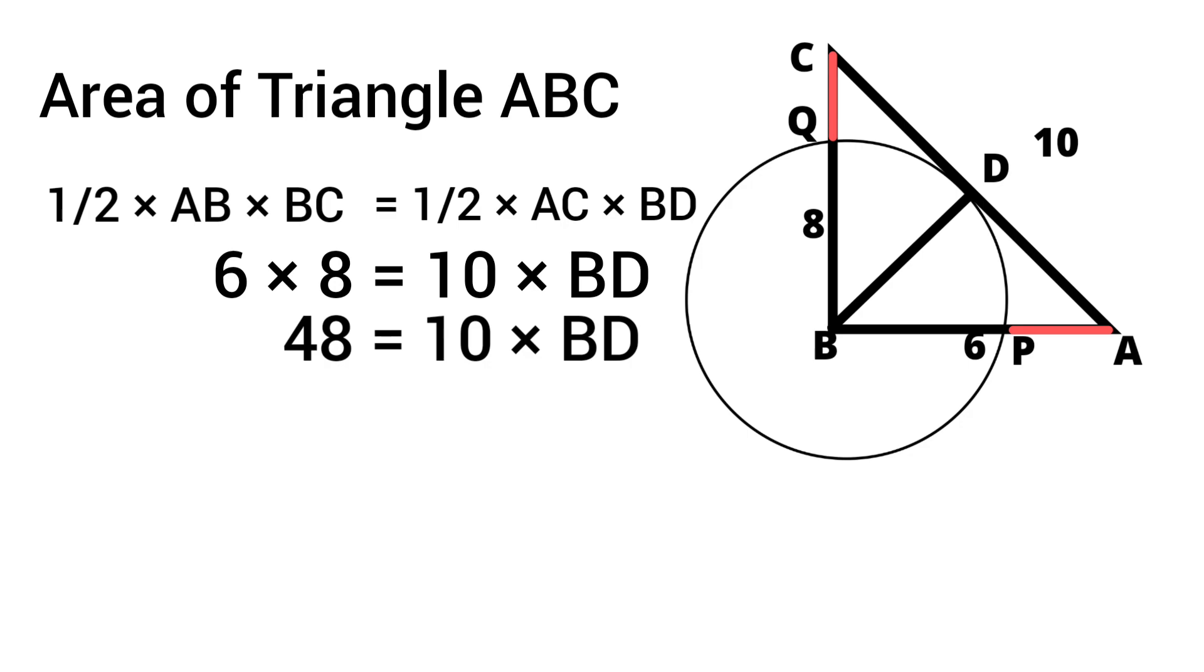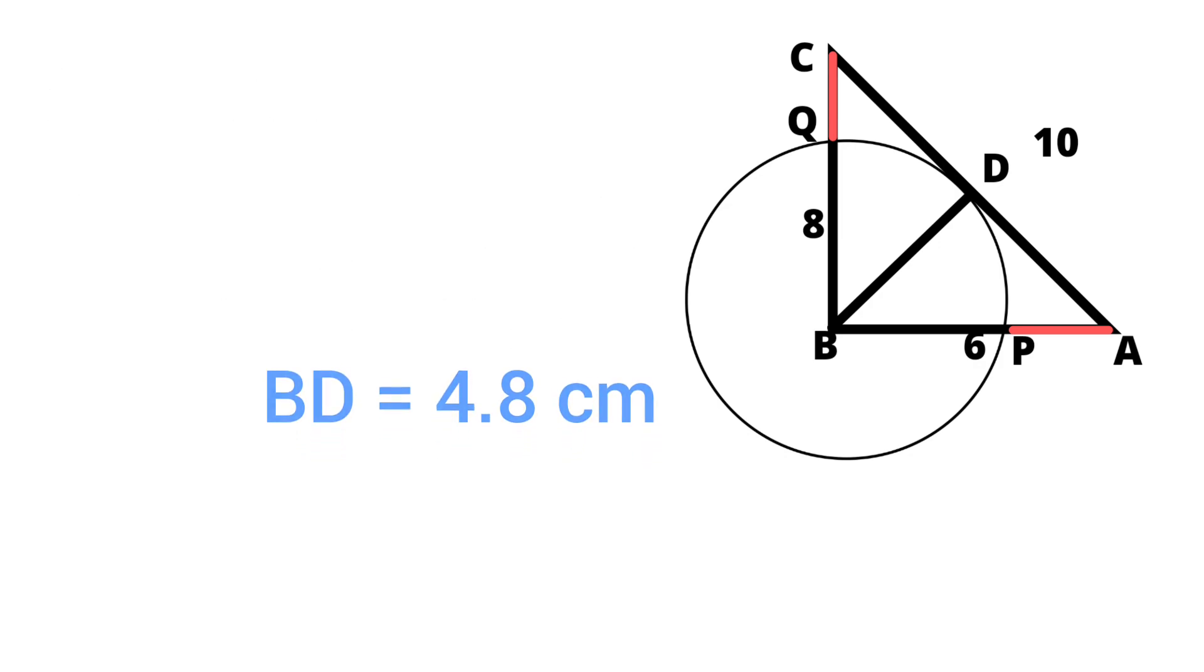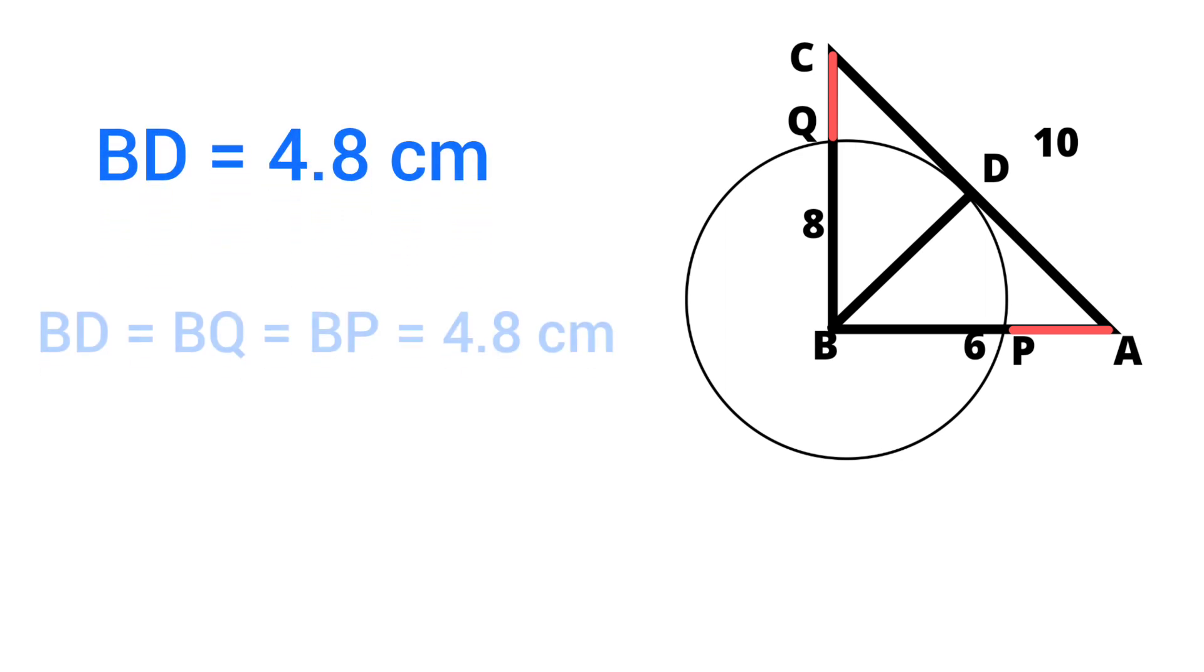Therefore, BD equals 48 by 10 equals 4.8 centimeters. We know that BD is the radius of the circle. So BD equals BP equals BQ equals 4.8 centimeters.